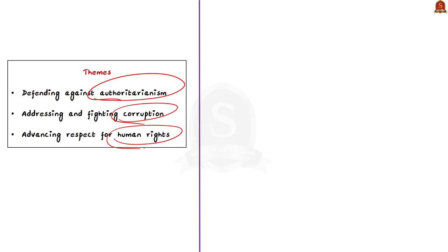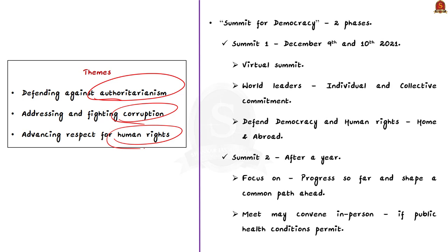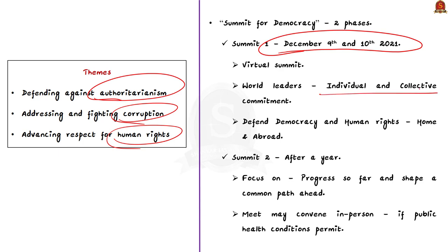This summit is planned to be held in two phases. The first phase will be held on December 9th and 10th of 2021. This first summit will provide a platform for leaders to make both individual and collective commitments to defend democracy and human rights.